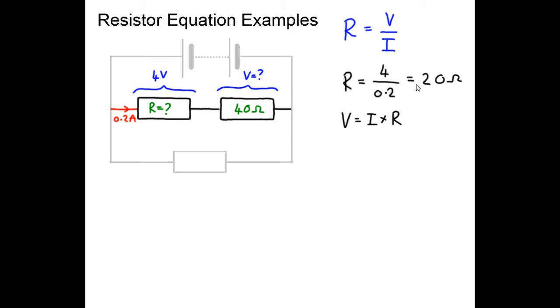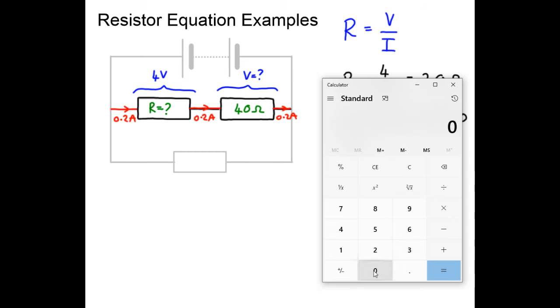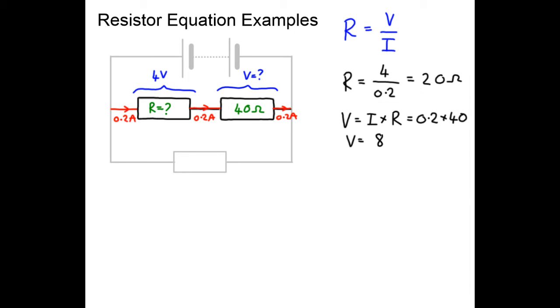We don't seem to have enough information because we know R but we don't know I. But we do know I because they're in series and we know that the current is the same in all parts of a series circuit, so it's 0.2 amps through our 40 ohm resistor. So now we can write 0.2 times by 40. So V comes out to be, get our calculator, 0.2 times 40 equals, and the answer is 8, and because it's a voltage the answer is 8 volts.